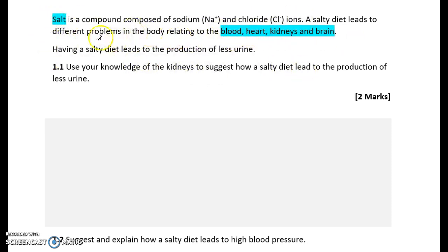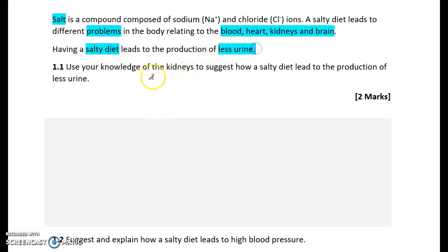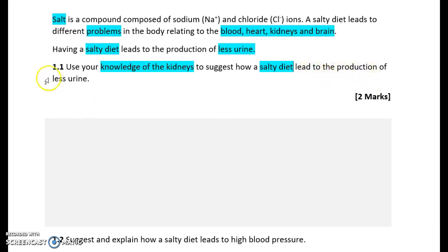In your mind, think about what type of problems salt might cause to the blood, heart, kidneys and brain. The question states that having a salty diet leads to the production of less urine. Use your knowledge of the kidneys to suggest how a salty diet leads to the production of less urine.